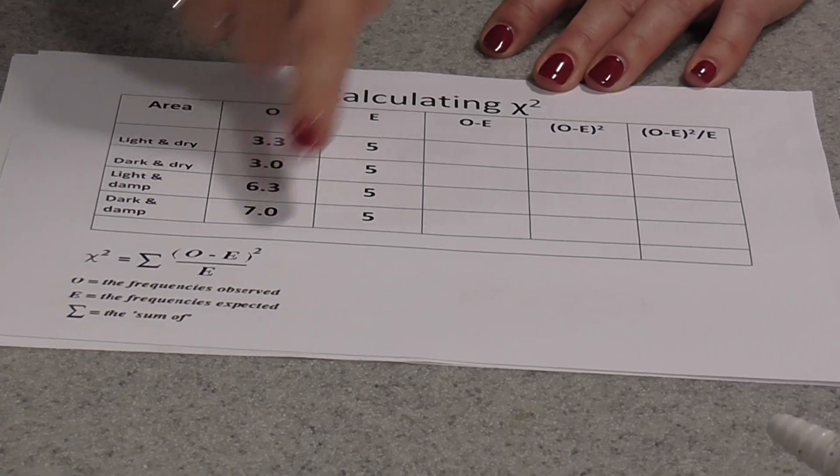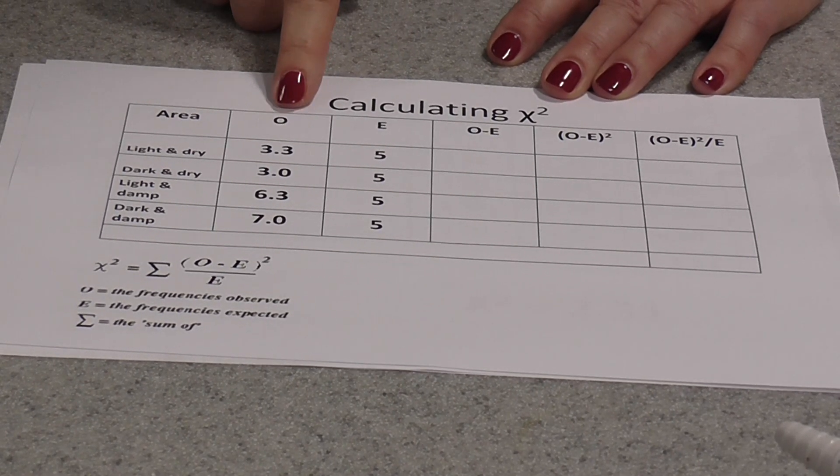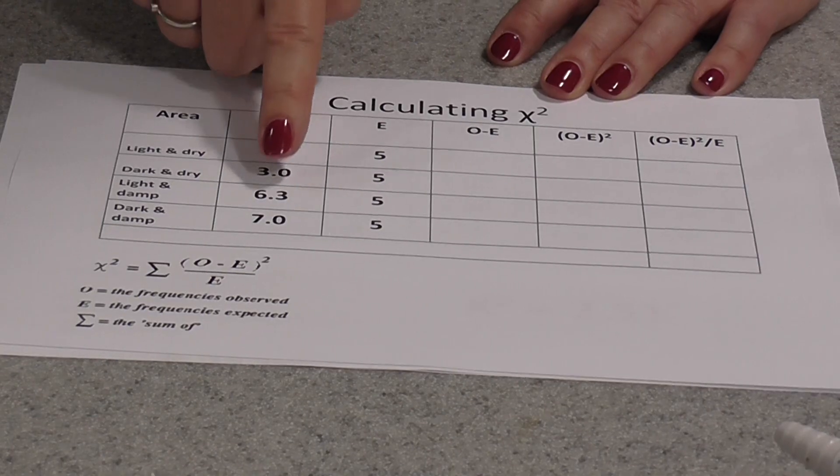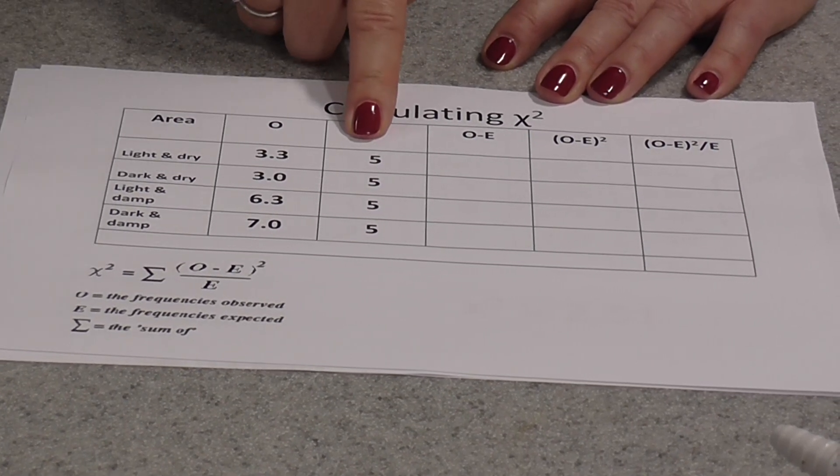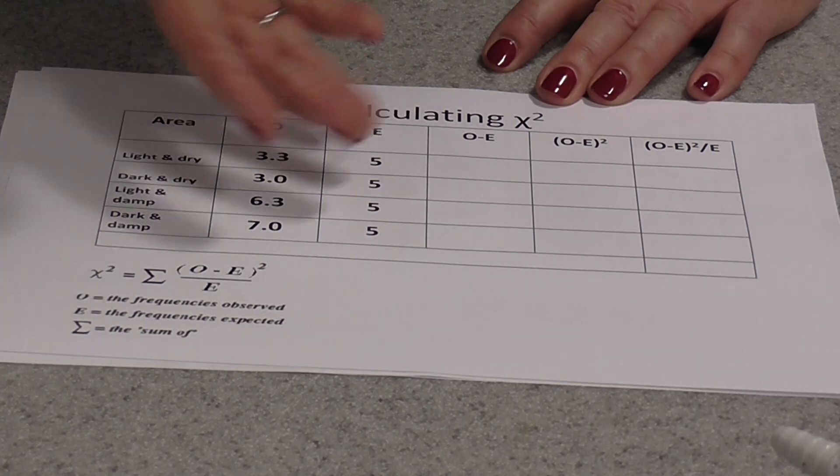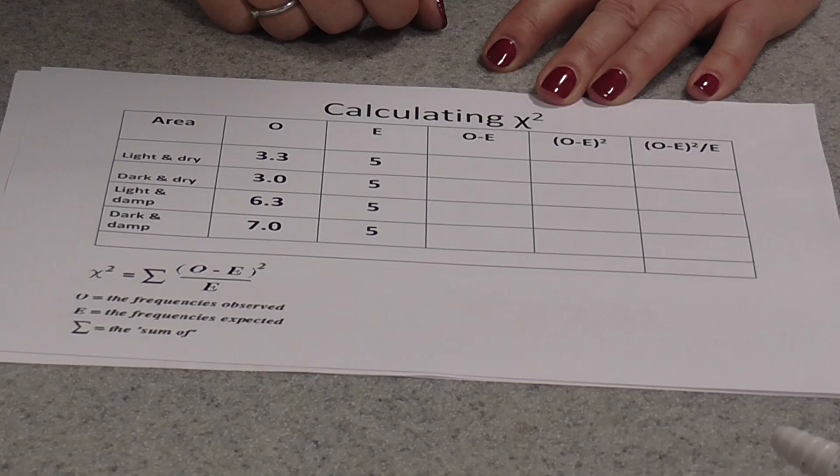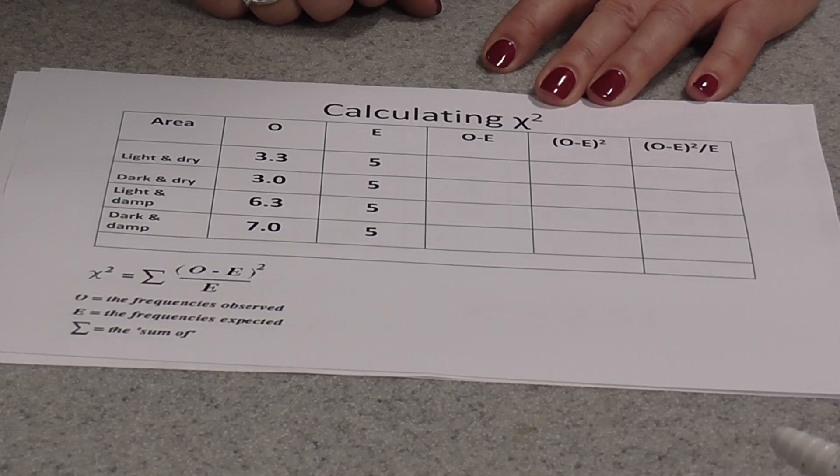So you see here in the first column, I've got my observed results. So that's the means that I've just calculated from my raw data, the mean number of wood lice in each area. The expected results in this case are all five because I used 20 maggots. And if the maggots have no preference over where they moved, we should expect to get them pretty evenly spread. So five in each section.